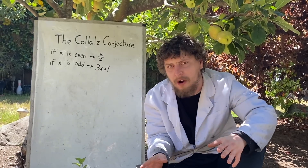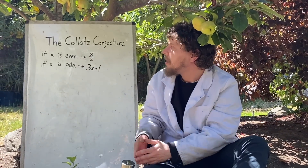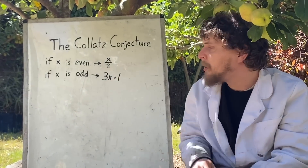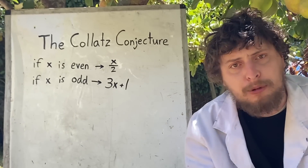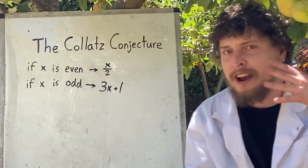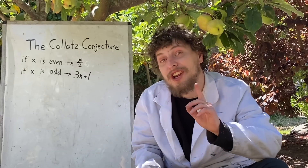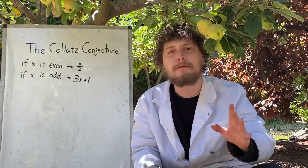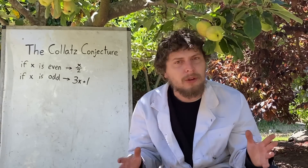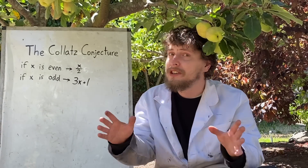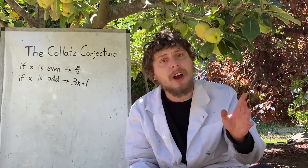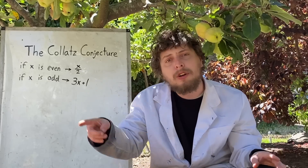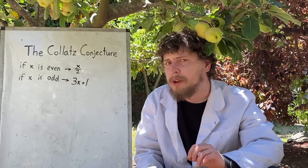This problem, despite being unsolved, is quite simple to describe. You take a whole number: if it's even, you split it in half; if it's odd, you triple it and add 1. Then you repeat that process with the new number you generated, again and again. This conjecture states that if you iterate this process starting from any whole number, it'll end up falling into the same loop or cycle that the number 1 does. If the conjecture is false, that would mean that some numbers either fall into a different loop of their own, or spiral upward, growing arbitrarily large without bound.